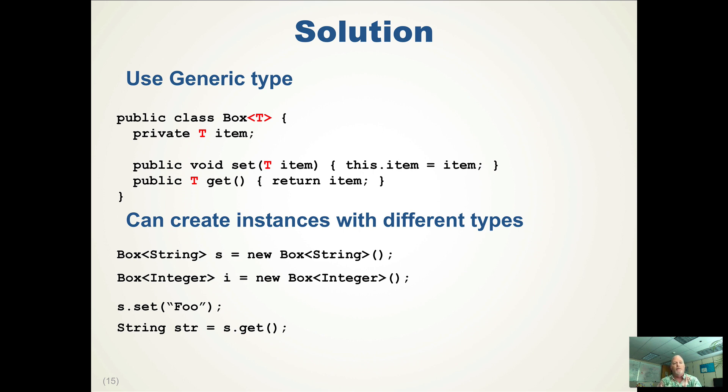And I don't need to cast the return of get to a string because get's return value, or the type of return of get for s, is a string. Whereas the return type of i.get() is an integer.